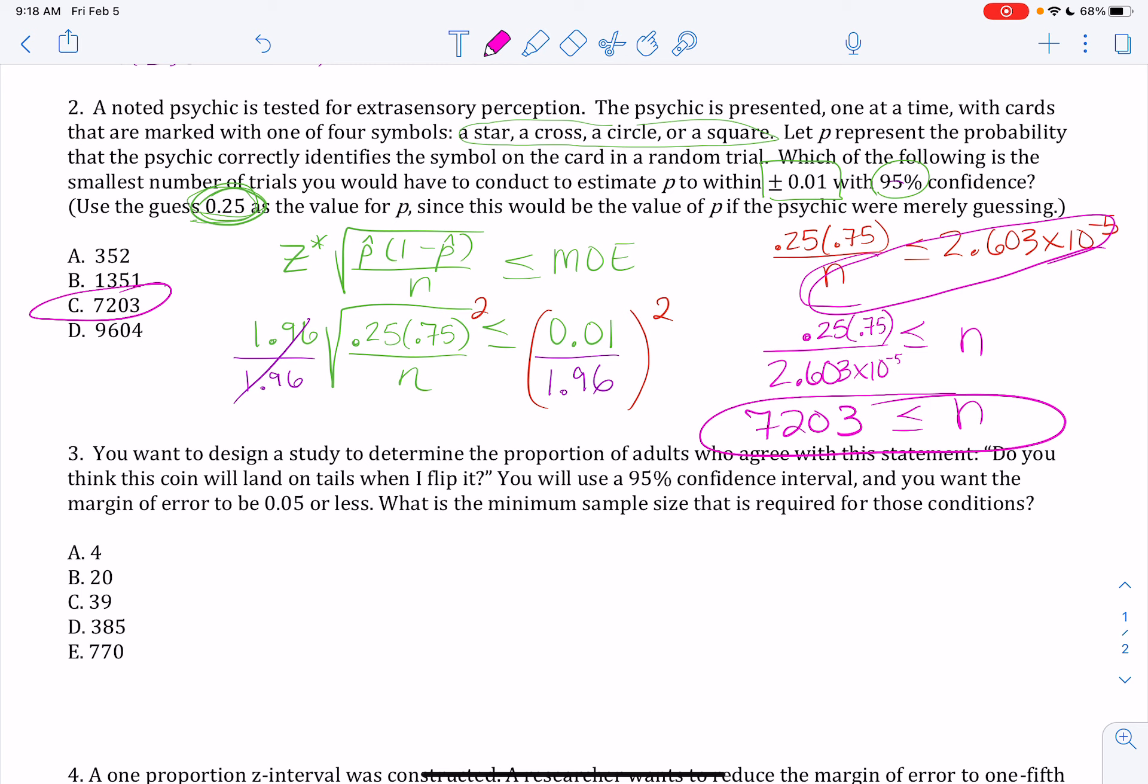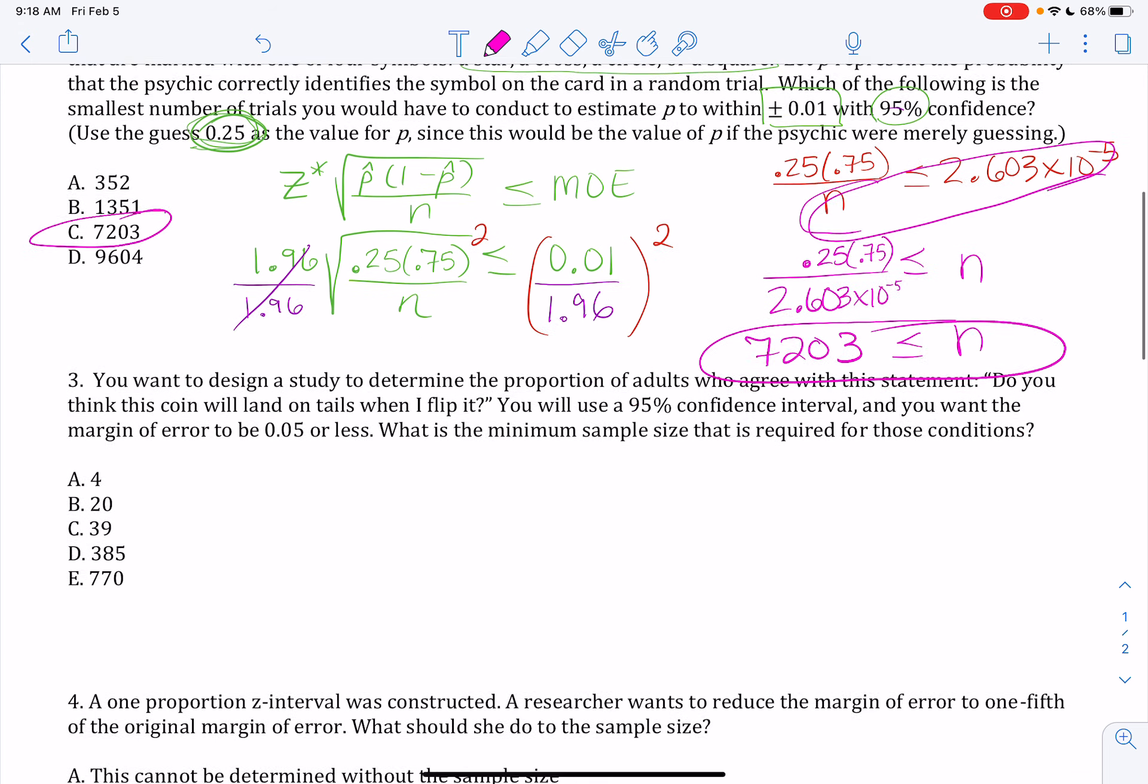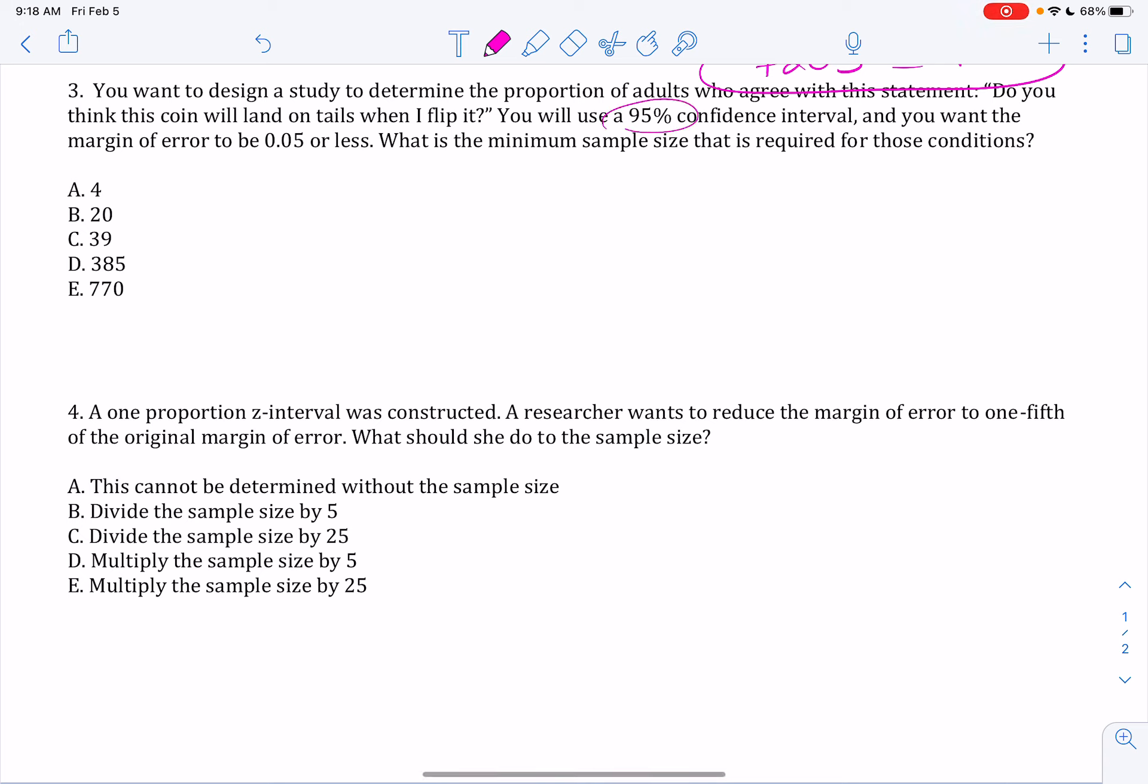So you want to design a study to determine the proportion of adults who agree with the statement, do you think this coin will land on tails when I flip it? You're going to use 95% confidence again, and you're going to get a margin of error of 5% or less. So again, I start with my Z star square root of P hat times 1 minus P hat over N being less than or equal to my margin of error desired. So my margin of error desired is 0.05. Z critical value for 95% is 1.96, and we were not really given any idea of what P hat should be in this case. The conservative value, if I'm not told anything, is to use P hat of 0.5.